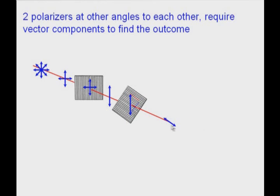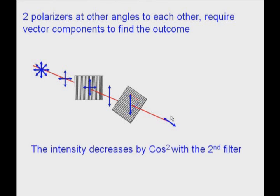So putting the two filters in a row, this is the direction of the orientation of the light that gets through. The intensity of this light that comes through the second filter is cosine squared of the angle between the two filters. So our original intensity was I0.